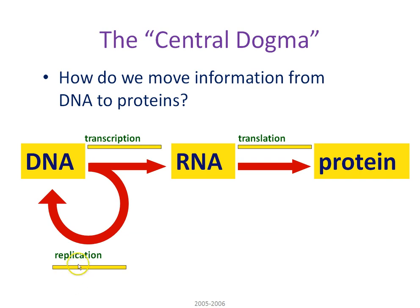Replication only happens when the cell is about to divide. Prior to cell division, you need an extra copy of that DNA. However, during the cell's general life cycle, the cell is carrying out its normal everyday processes. Liver cells, skin cells, and nerve cells need hundreds and thousands of proteins to carry out chemical reactions. So we have a general flow of information within the cell: DNA is used to make messenger RNA, and messenger RNA is used to make proteins. Proteins, like enzymes, carry out life processes.